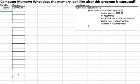Let's look at the next variable. Int months equals 9. Months has the value 9. Then string response is monthly salary equals. Okay, so string response. Response here.